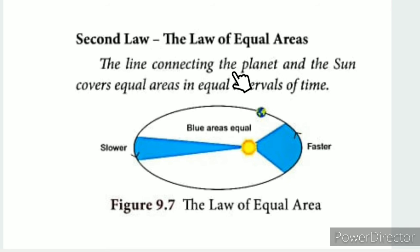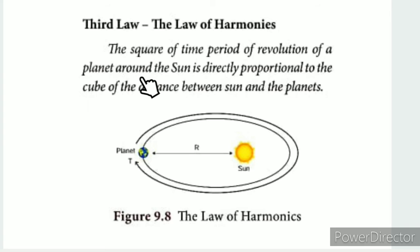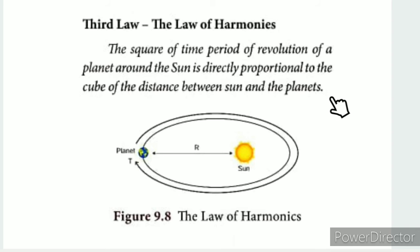The line connecting the planet and the sun covers equal areas in equal intervals of time. The third law is the law of harmonies: the square of the time period of revolution of a planet around the sun is directly proportional to the cube of the distance between the sun and the planet.